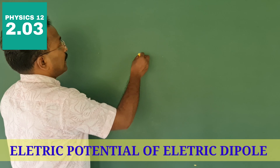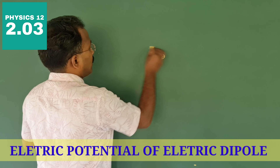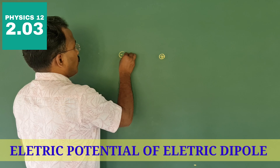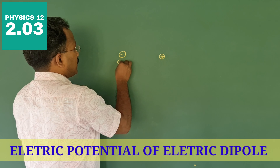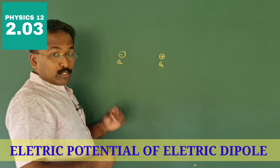Good morning, children. We are going to start our third class of the second chapter. Classes are serially numbered and all our classes are available in separate playlists chapter-wise in our playlist section. Today we are going to calculate the electric potential due to an electric dipole.